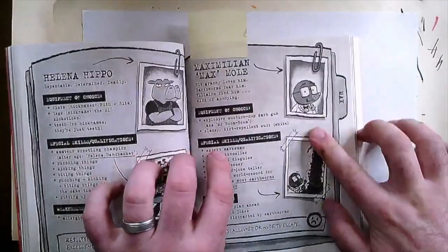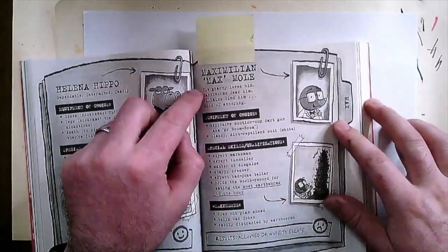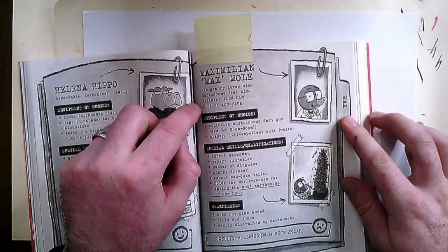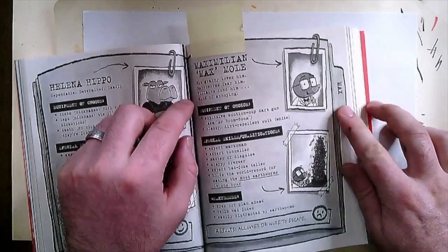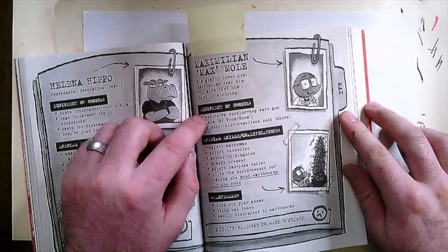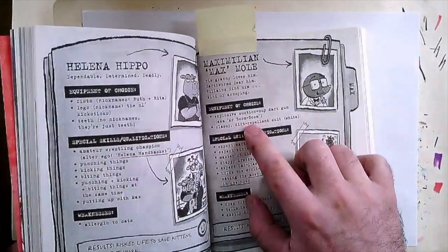So let's have a little read about Max Mole. His granny loves him, earthworms fear him, villains find him kind of annoying. His equipment of choice: his explosive suction cup dart gun, aka Mr. Boom Boom.